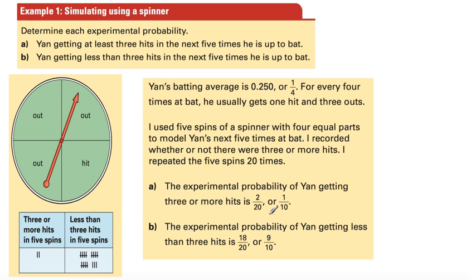Ladies and gentlemen, this is pretty accurate. Because to get three out of five hits, you're batting 600. That's six out of every ten times at bat. Yan's batting 250. That's two and a half times every ten at bats.